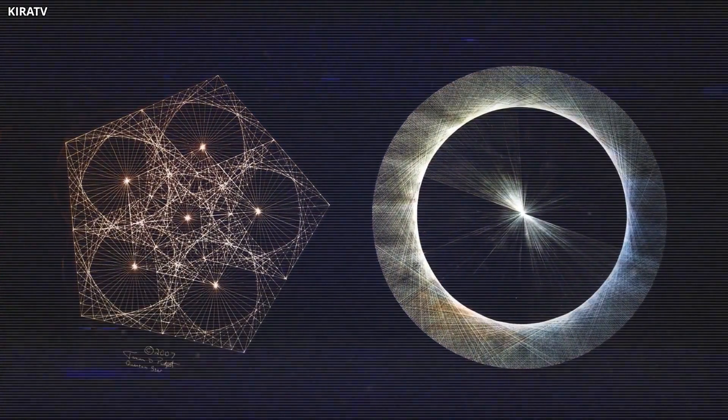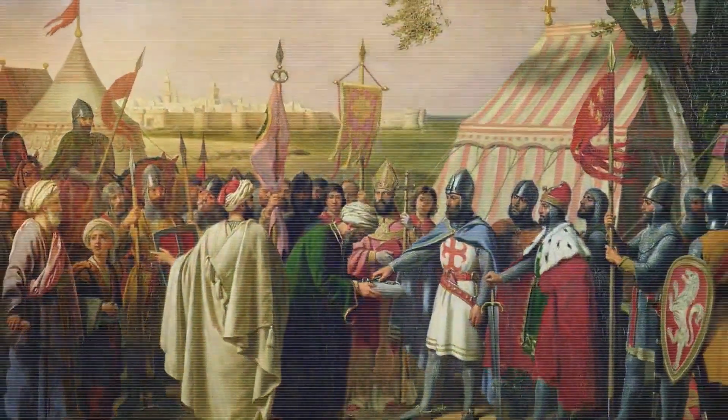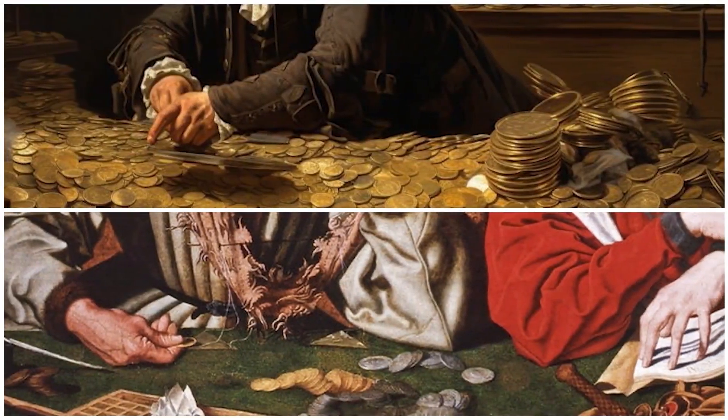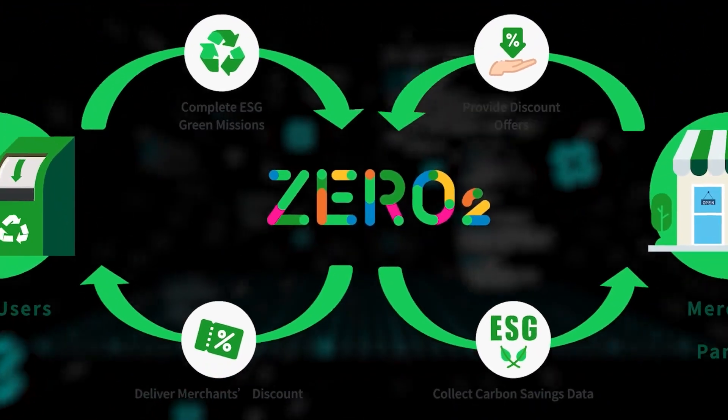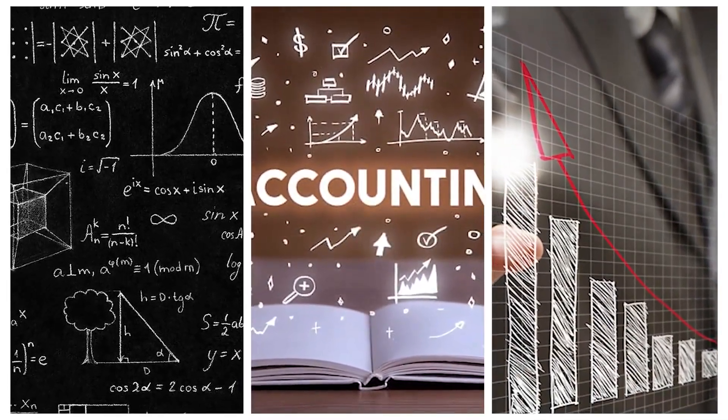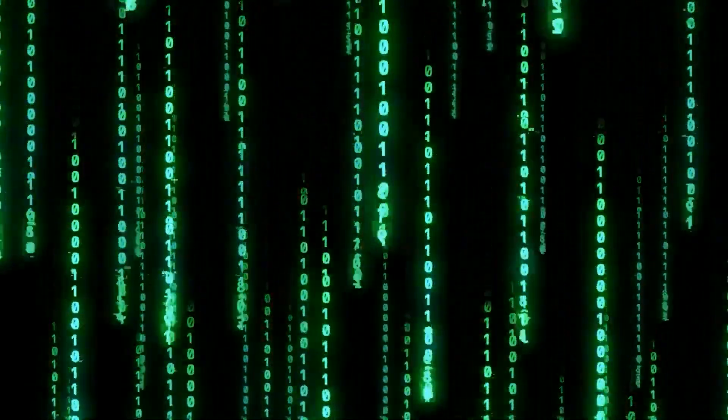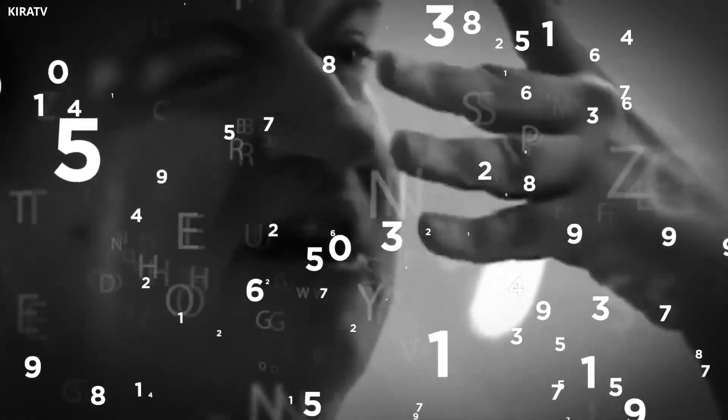Despite this initial resistance, zero eventually found its place in European society, especially in commerce and finance. By the 15th century, merchants recognized the utility of zero and it became integral to mathematics, accounting, and business. However, its mysterious nature persisted. From a philosophical perspective, zero has always fascinated thinkers. Jean-Paul Sartre, the existentialist philosopher, once remarked that nothingness carries being in its heart, a sentiment that aligns well with the strange and paradoxical nature of zero.